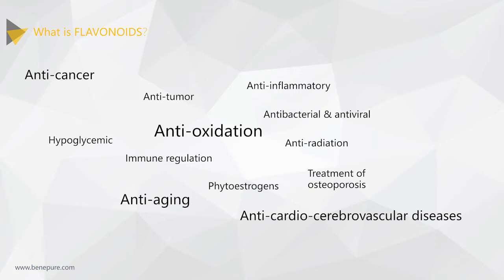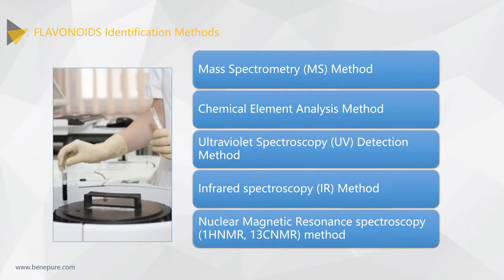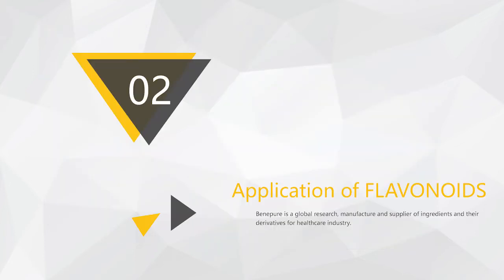Therefore the function of flavonoids has attracted people's attention and research on these compounds has become a hot topic both domestically and abroad. Currently, people have developed many extraction methods to extract active flavonoid ingredients from plants, such as hot water extraction and organic solvent extraction using ethanol or methanol. At the same time, many methods have been developed to identify and test flavonoid ingredients: MS method, chemical element analysis, UV method, IR method and NMR methods, etc.